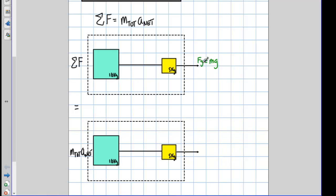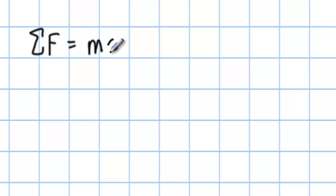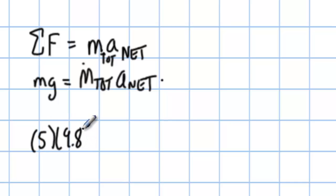The sum of the forces equals m-total times a-net. The only force is the little force of gravity — little mg equals m-total times a-net. My positive axis is defined going to the right, so there's only one force, which is mg. So: little m (5 kg) times g (9.8) equals the total mass (15 kg) times a-net.